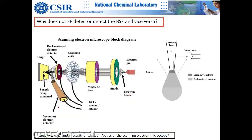Due to the positive voltage applied at the secondary electron detector, all secondary electrons accumulate in one direction toward the detector. They lose their directionality, which is good because it maximizes collection but means they lose the identity of which atom they came from.